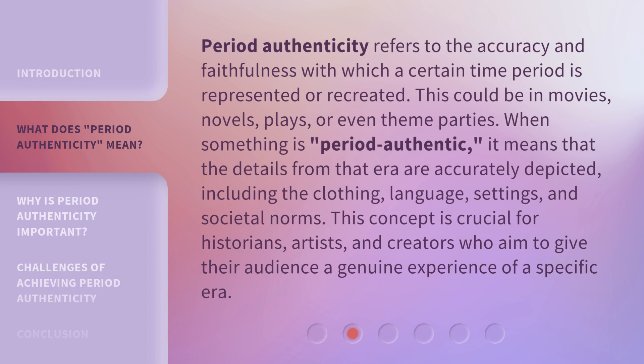Period authenticity refers to the accuracy and faithfulness with which a certain time period is represented or recreated. This could be in movies, novels, plays, or even theme parties. When something is period authentic, it means that the details from that era are accurately depicted, including the clothing, language, settings, and societal norms. This concept is crucial for historians, artists, and creators who aim to give their audience a genuine experience of a specific era.